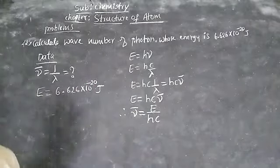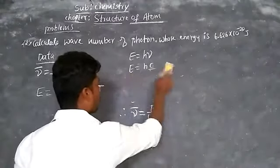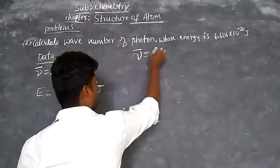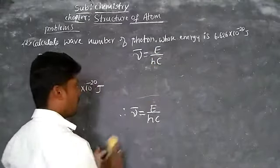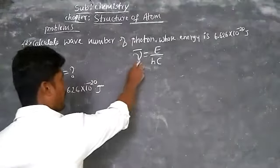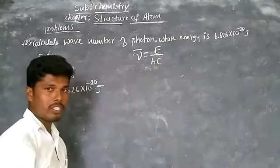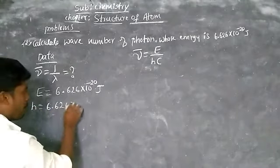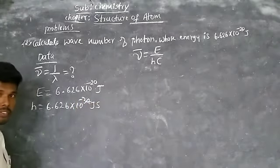You know the formula. Directly write: nu-bar equals E divided by H·C. H is 6.626 × 10⁻³⁴ joule·second and C is 3 × 10⁸ meters per second. Substitute and calculate.